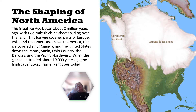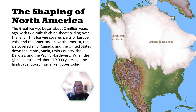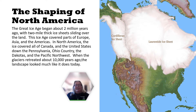Now we're going to return briefly to the Great Ice Age. The Great Ice Age began about two million years ago with two-mile-thick ice sheets sliding over the land. This ice age covered parts of Europe, Asia, and the Americas — in North America, covering all of Canada and the U.S. down to the Pennsylvania-Ohio country, the Dakotas, and the Pacific Northwest. When the glaciers retreated about 10,000 years ago, the landscape looked much like it does today with some minor changes.